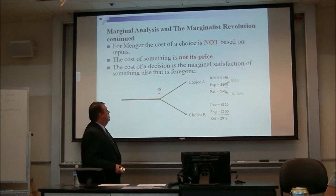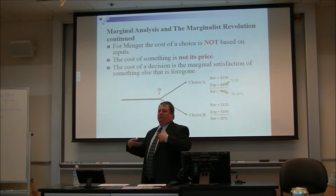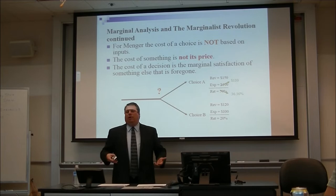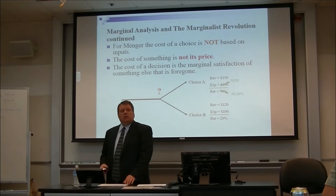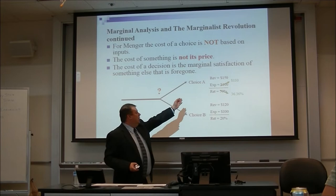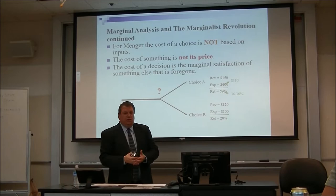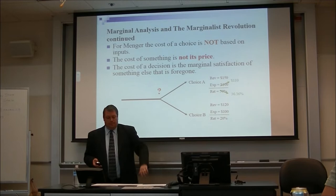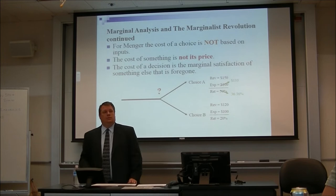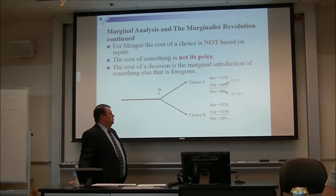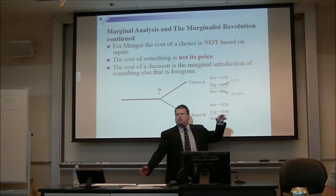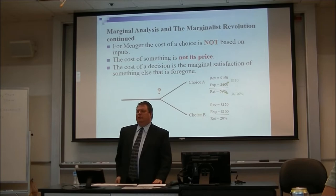Suppose the price of steel goes up and I'm a manufacturer who uses steel. My expenditures go up. If prices keep going up, eventually a different choice becomes dominant, and whatever that rate of return is — say 18% — that becomes my cost. In finance, this would be akin to our weighted average cost of capital. If expenditures rise enough, choice A would be worse than B. So you're not just looking at the nominal dollar amount; you're looking at percentage return as well.